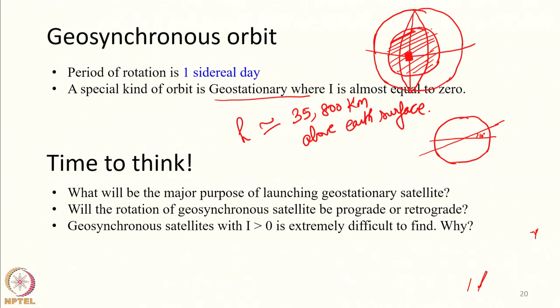In the last lecture we discussed about geosynchronous orbits and as a special case geostationary orbits, the main purpose of why satellites are launched in geostationary orbits, and we also discussed about Lagrange points. If a satellite is placed in geostationary orbit it will be observing the same point on earth again and again, covering a certain region of the globe. As shown in the slide, this particular red circle is an example of the coverage of a geostationary satellite.